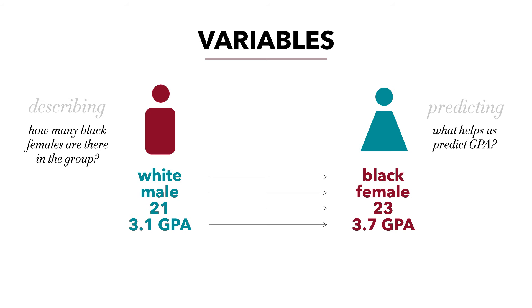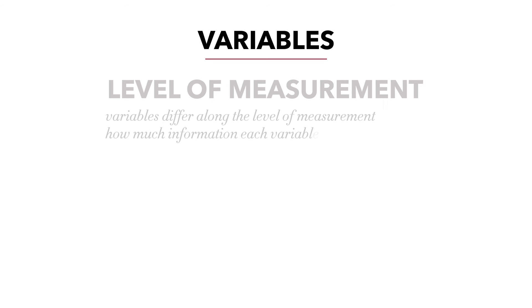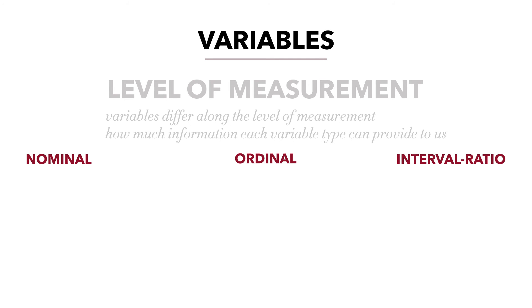Variables are distinguished along the lines of what's known as level of measurement. This concept is absolutely key to understanding the material in this course. Level of measurement simply means that variables differ in how much information each variable type can provide to us. For this course, we're going to categorize all variables into one of three levels of measurement: nominal, ordinal, or interval ratio.